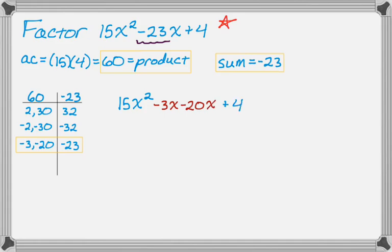Now remember, if you did the factoring by grouping before, it doesn't matter what order you put those in. You could put negative 20x minus 3x or negative 3x minus 20x. You get the same answer either way.